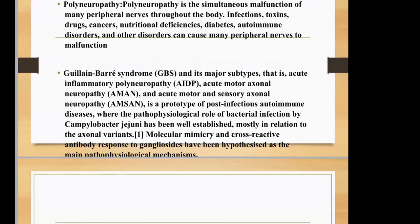Guillain-Barré syndrome and its major subtypes — acute inflammatory polyneuropathy, acute motor axonal neuropathy, and acute motor and sensory axonal neuropathy — are a prototype of post-infection autoimmune diseases. The pathophysiological role of bacterial infection by Campylobacter jejuni has been well established, mostly in relation to axonal variants. Molecular mimicry and cross-reactive antibody responses have been identified as the main pathophysiological mechanisms.